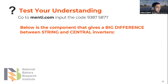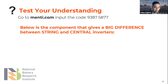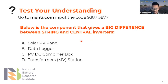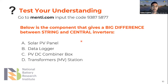I'd like to test your understanding. Please go to menti.com and enter the code 9387. The question is: which component gives the biggest difference between string and central inverters? Is it A) solar PV panel, B) the data logger, C) DC combiner box, or D) the MV transformer station?